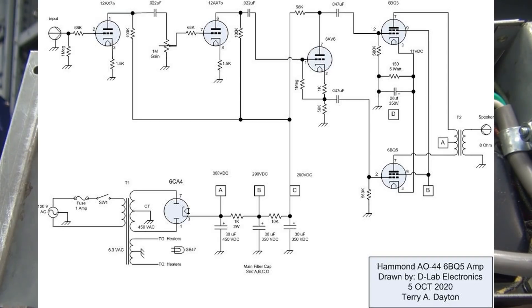From there, you drive the grids of the 6BQ5. I utilize the stock power supply in the AO44. So I'm still using the 6CA4 rectifier tube and the original filter cap in this case was good. So I repurposed that too for the new design.